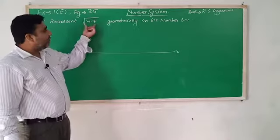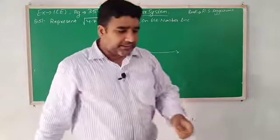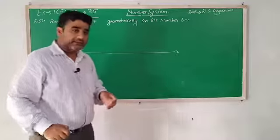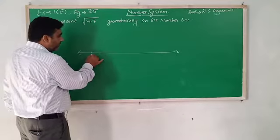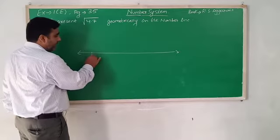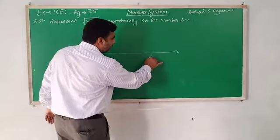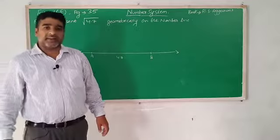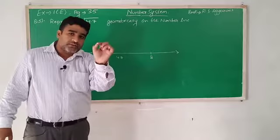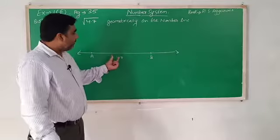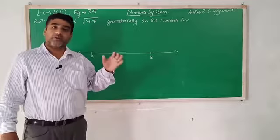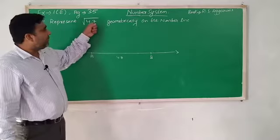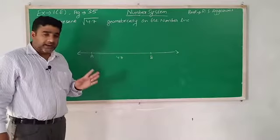Our given value is 4.7. Using a scale in centimeters, you can mark 4.7. Place the scale at the start, mark point A, then mark 4.7 cm ahead as point B. So AB = 4.7 cm. If 5.6 were given, you would make AB = 5.6. Is that clear?